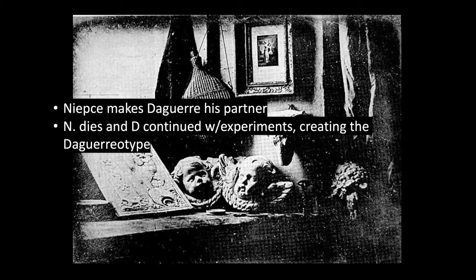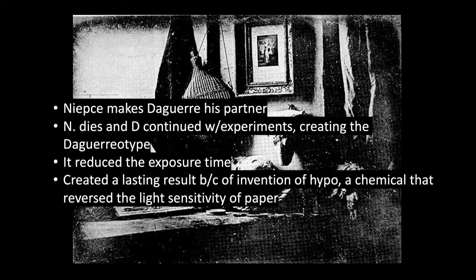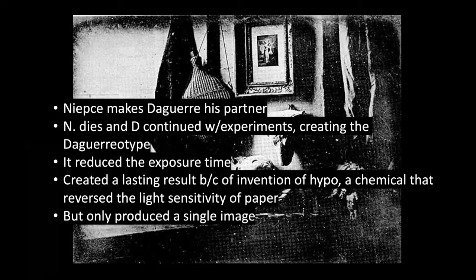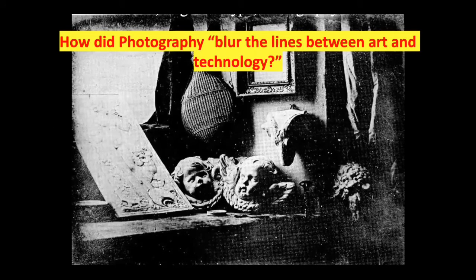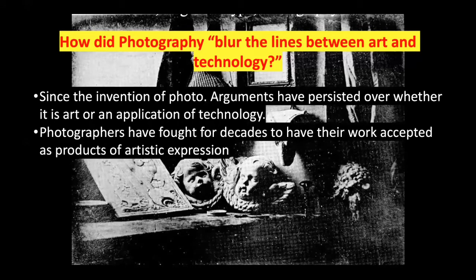Daguerre is really credited as creating photography, but there's someone who came before him — similar to how we credit Picasso for Cubism even though he had a collaborator. Daguerre's Daguerreotype reduced the exposure time, so you didn't have a subject sitting there for eight hours. He created a lasting result because of the invention of a chemical called hypo, which reversed the light sensitivity of paper, though it only produced a single image. This leads to the argument: does photography blur the lines between art and technology?